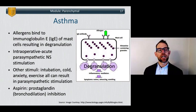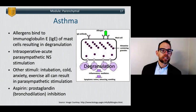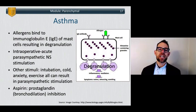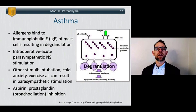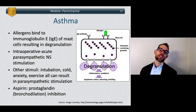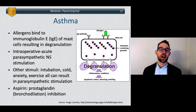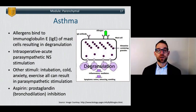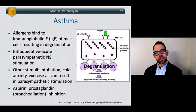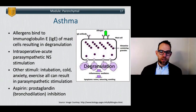Let's talk about asthma — what causes it. We need to think about allergens: seasonal, dog dander, or some atmospheric agent that binds to IgE and results in mast cell degranulation. Intraoperatively, asthma is commonly caused by overwhelming parasympathetic nervous system stimulation. Other causes include the act of intubation, cold, agitation or anxiety surrounding surgery, or exercise — all of which can result in overwhelming parasympathetic activation, causing bronchiolar constriction and increased secretions. Recall that aspirin on its own can trigger an asthma crisis, as it causes prostaglandin inhibition — and prostaglandins result in bronchodilation.